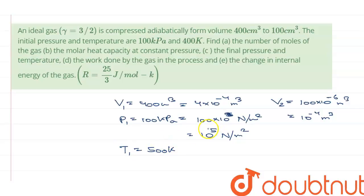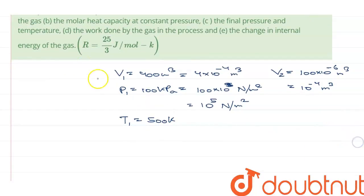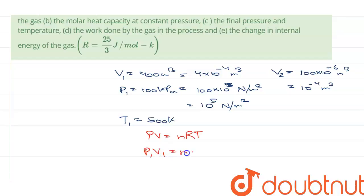Find Part A: the number of moles of the gas. To find this, I am going to use the ideal gas equation. The ideal gas equation is PV = nRT. So we have P1V1 = nRT1.